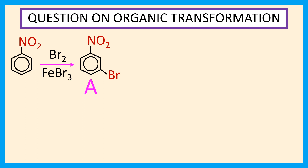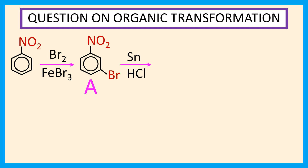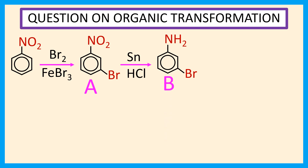Metabromonitrobenzene reacts with Sn in the presence of HCl to form metabromoaniline. So, compound B is metabromoaniline.